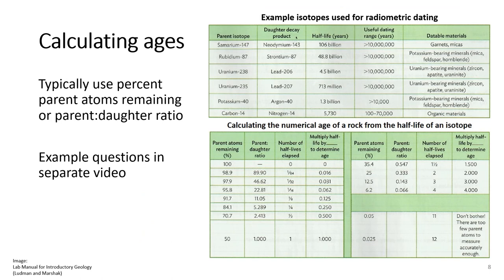Typically, we use the parent-to-daughter isotope ratios to calculate absolute ages. There are some example problems at the end of this presentation for you to try, but if you're stuck, you can always ask about them in office hours.